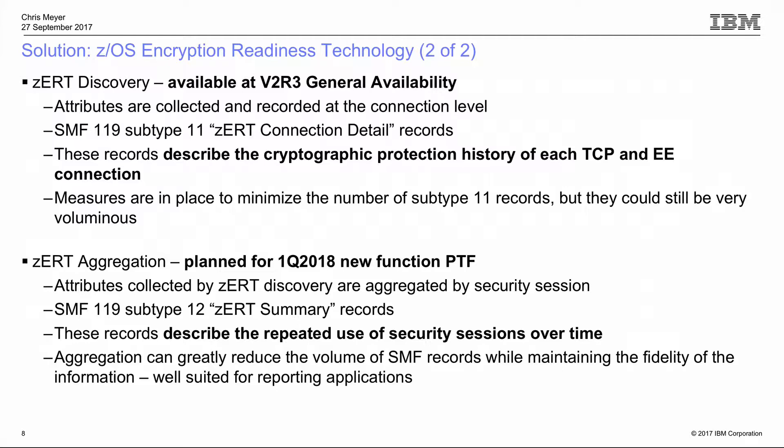There are two features in zERT. One is available at GA at the end of this week, called zERT Discovery. This is the basic capability: the ability to observe traffic and collect information at a per-TCP connection level or per-Enterprise Extender connection level.